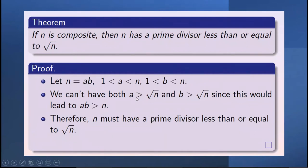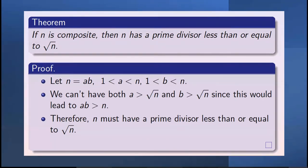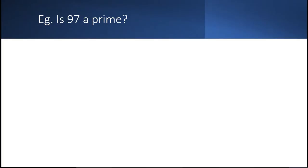If both a and b were greater than √n, then a × b would give a number greater than n. Therefore, if n is composite, it must have a prime divisor less than or equal to √n. Conversely, if n is prime, there should be no prime divisor less than or equal to √n.